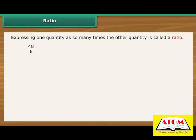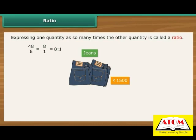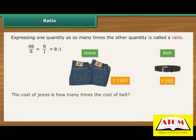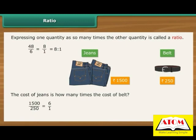48 divided by 6 is 8 divided by 1, which can also be written as 8 is to 1. Colon is the symbol used to denote ratio. For another example, Tushar bought a pair of jeans for Rs. 1500 and a belt for Rs. 250. The cost of jeans is how many times the cost of the belt? Divide 1500 by 250, which is the same as 6 divided by 1, expressed as the ratio 6 is to 1. Therefore, the pair of jeans is 6 times more costly than the belt.